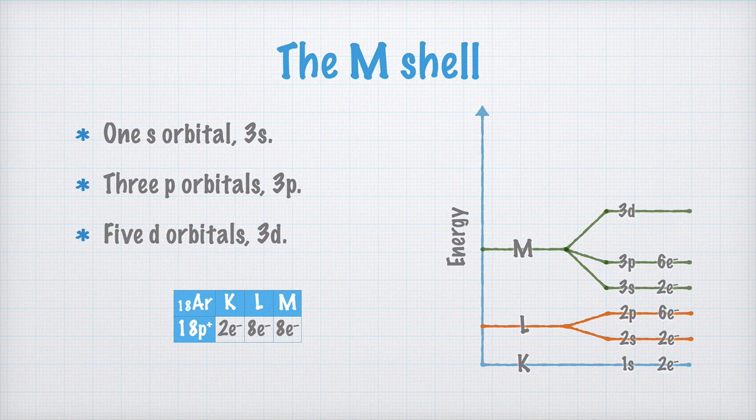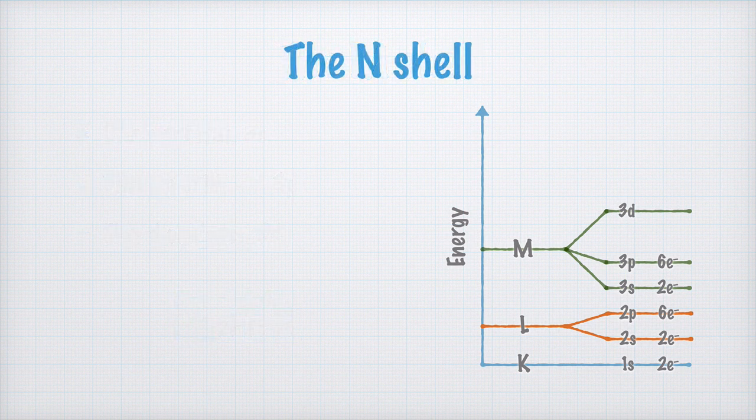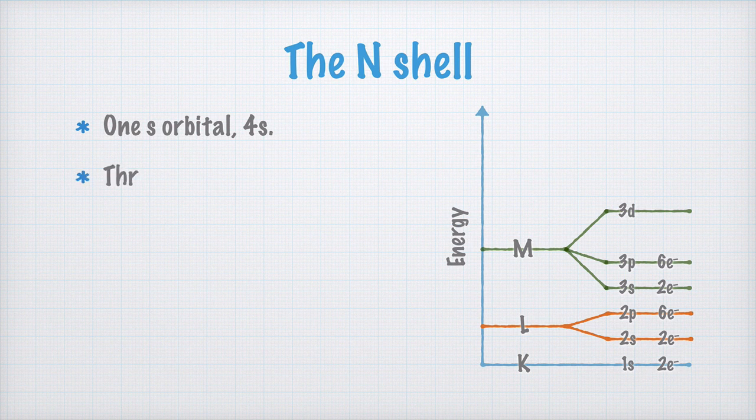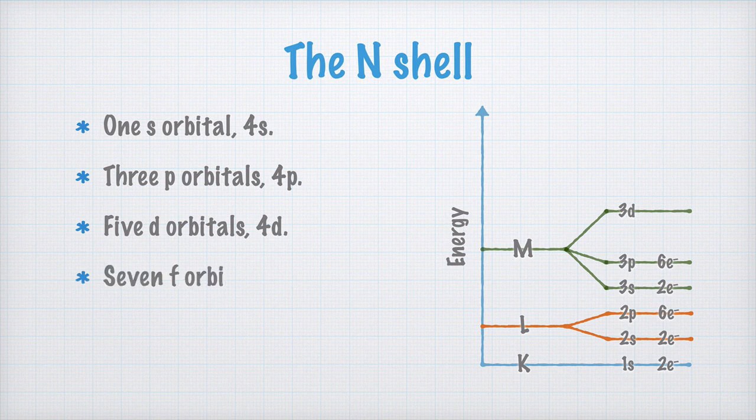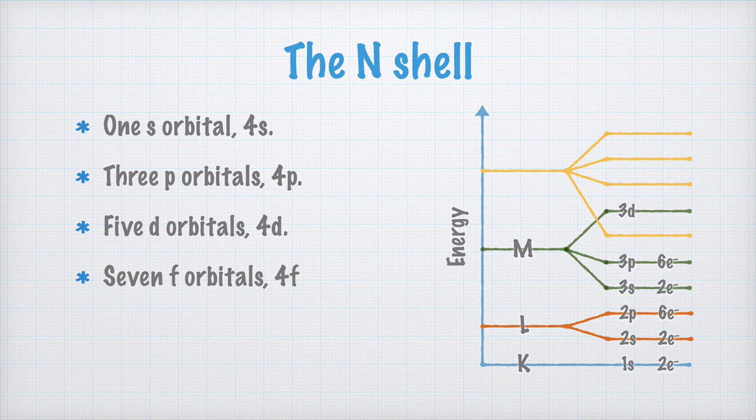It is when we get to the next atom that things start to get interesting. To do this, we need to look at the N-shell as well. It has one s orbital, called 4s, three p orbitals, called 4p, five d orbitals, called 4d, and seven f orbitals, called 4f. And pay attention to how they are drawn here.